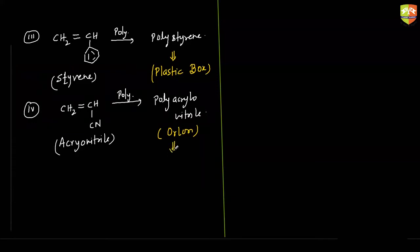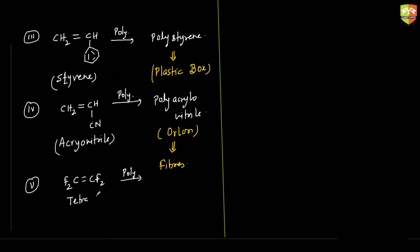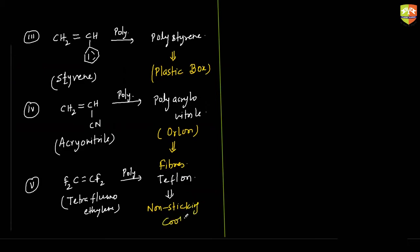Polyacrylonitrile is used for the formation of fibers. Fifth one: if I remove all the hydrogen atoms and add fluorine, we get CF2 double bond CF2. This compound is tetrafluoroethylene, the monomer, and polymerization of this gives the compound we call Teflon. The use of Teflon is the formation of non-stick cookware. Even mouse pads are made of Teflon.